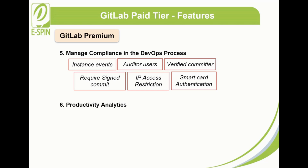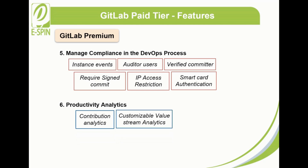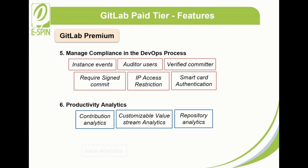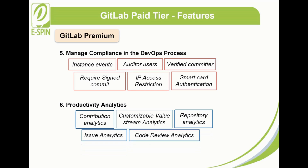6. Productivity analytics. GitLab Premium analyzes graphs and reports to understand team, project, and group productivity. This feature includes contribution analytics, customizable value stream analytics, repository analytics, issue analytics, and code review analytics — allowing the team to uncover patterns and best practices to improve overall productivity.